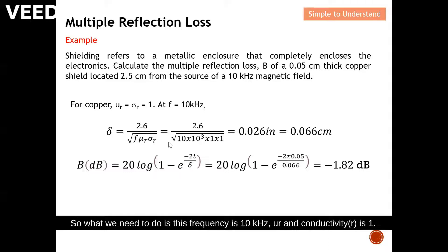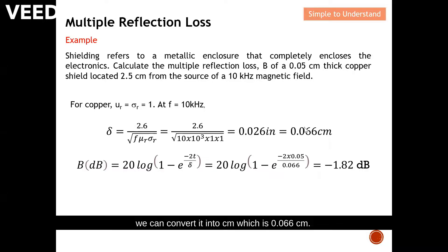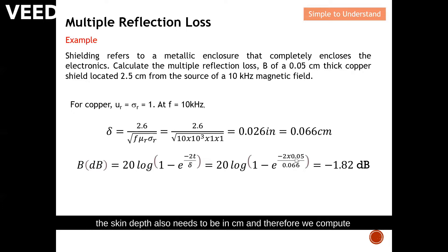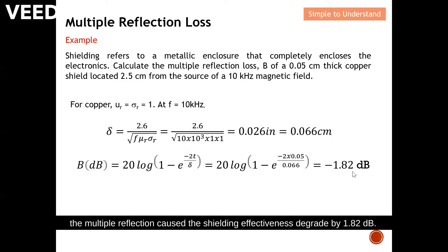Using the skin depth equation at 10 kHz with μr and conductivity ratio equal to 1, we calculate a skin depth of 0.026 inches, which converts to 0.066 centimeters. Applying the multiple reflection equation with shield thickness t = 0.05 cm and skin depth = 0.066 cm, we compute a multiple reflection loss B of −1.82 dB. This means multiple reflection causes the shielding effectiveness to degrade by 1.82 dB. With that, I'd like to end the discussion — please like and subscribe. Thank you!